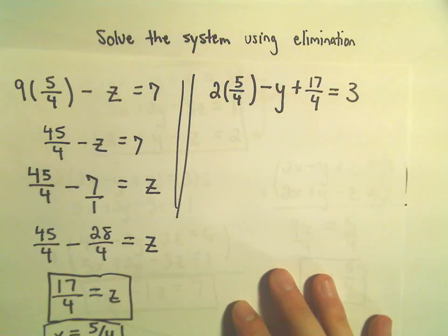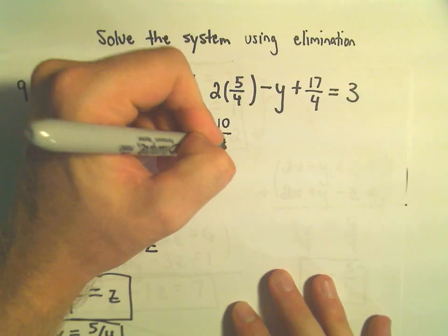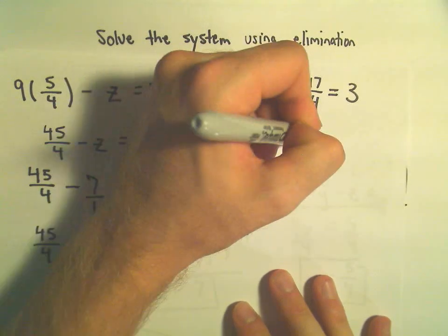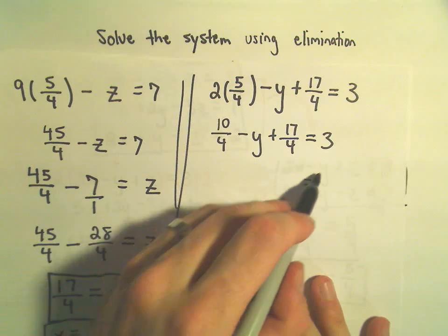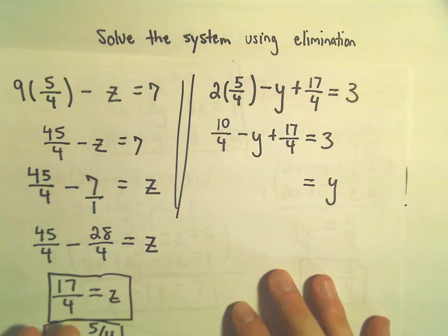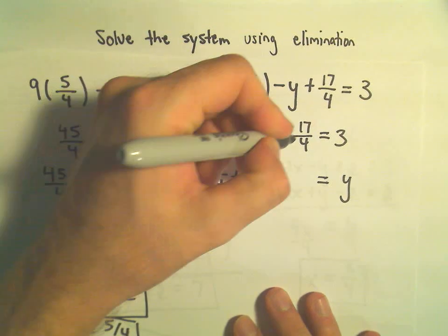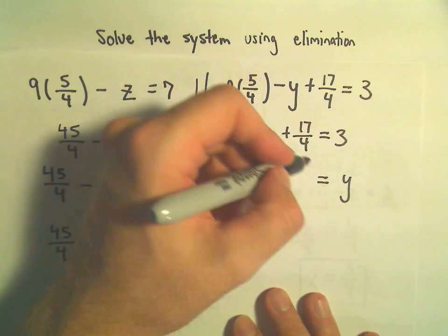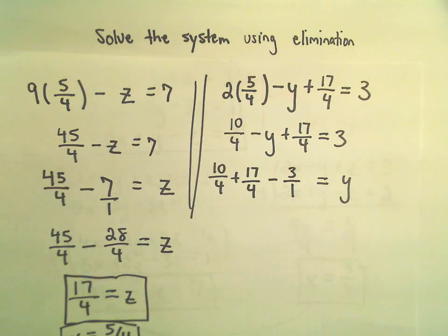We could cancel, but since the denominators are 4s anyway, I'm just going to leave it alone. So we would have 10 fourths minus y plus 17 over 4 equals 3. And what I'm going to do is I'm going to add y to both sides. That would bring my y to the right side. The 10 fourths, I'm going to leave that on the left. The positive 17 over 4, I'm going to leave that on the left. We would have to subtract 3 from both sides, which would be 3 over 1 if we get common denominators. We would have to multiply top and bottom by 4.